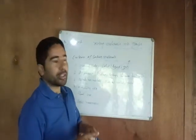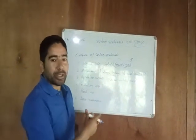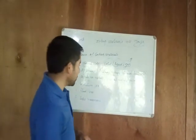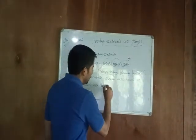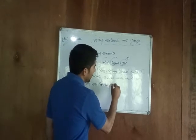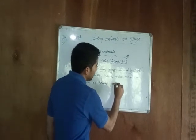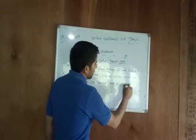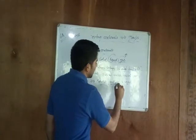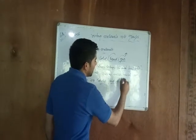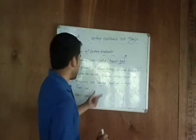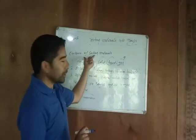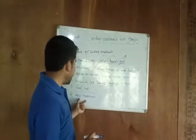Number four criteria is solubility. We have to check the solubility of the material — solubility means is the material soluble in water or is the material insoluble in water. Accordingly, we can classify the material into the respective group of soluble or insoluble.